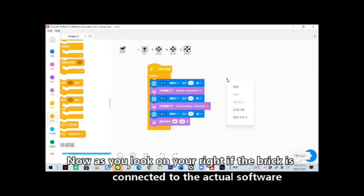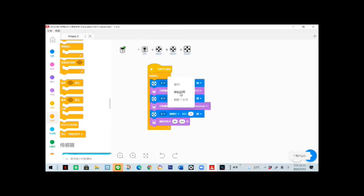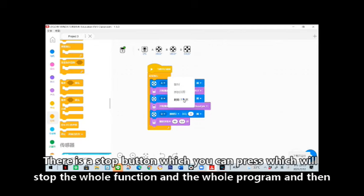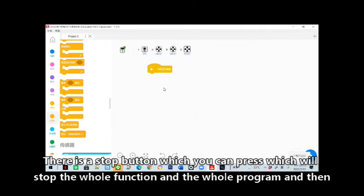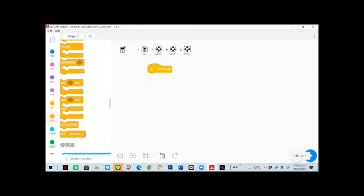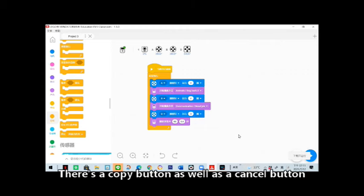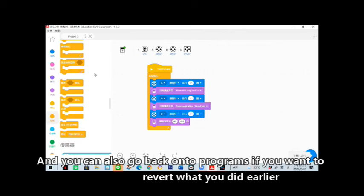Now as you look on your right, if the brick is connected to the actual software, there is a stop button which you can press which will stop the whole function and the whole program. There is a copy button as well as a cancel button, and you can also go back onto your programs if you want to revert what you did earlier.